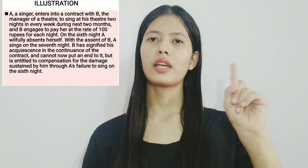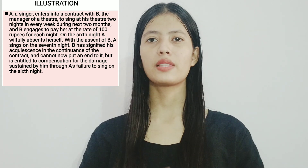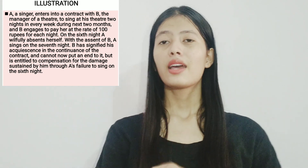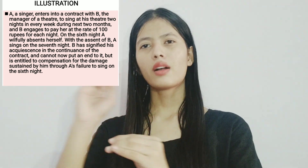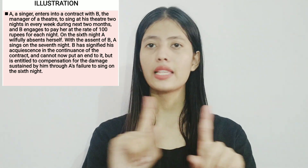The second illustration is similar to the first. A is again a singer and B is the manager of the theatre. B pays A one hundred rupees to sing every two nights for two months. Here also, A is absent on the sixth day. However, B, by his conduct, allows A to continue and gives his assent that A can sing on the seventh day.